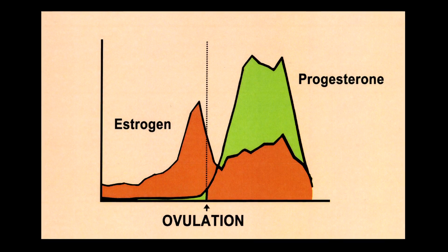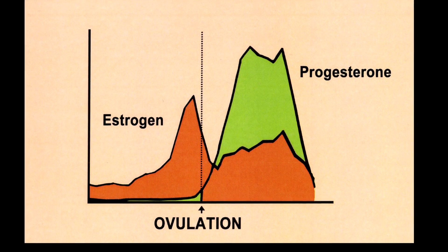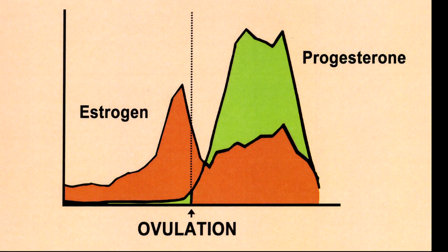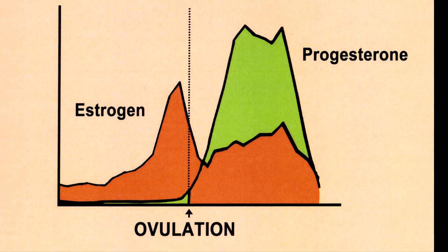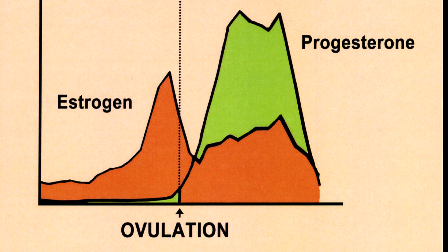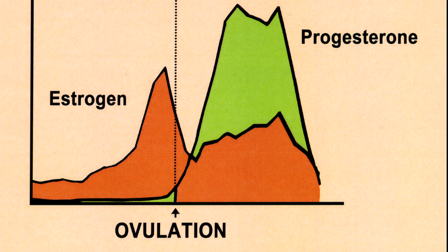The corpus luteum begins making another important hormone called progesterone. Here is a diagrammatic representation of the hormonal changes that occur during the menstrual cycle. As you can see, estrogen rises to a peak just before ovulation and then falls dramatically after ovulation. Estrogen is still being made, but now progesterone becomes the dominant hormone.